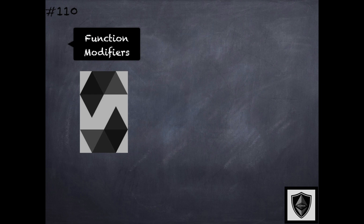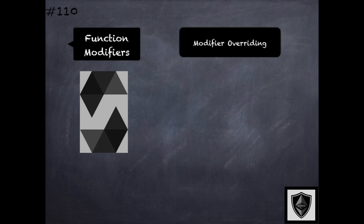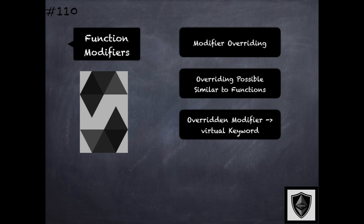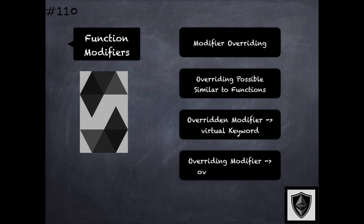Function modifiers can also override each other. This is very similar to how function overriding works for modifiers, except that there is no concept of overloading for modifiers. The virtual keyword must be used on the overridden modifier, and the override keyword must be used in the overriding modifier — very similar to the concept of virtual and override functions.